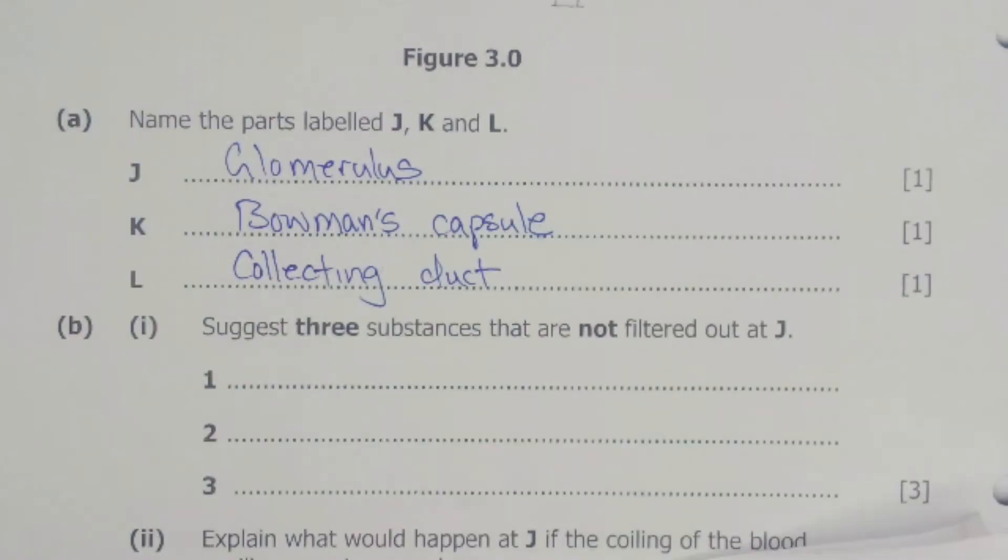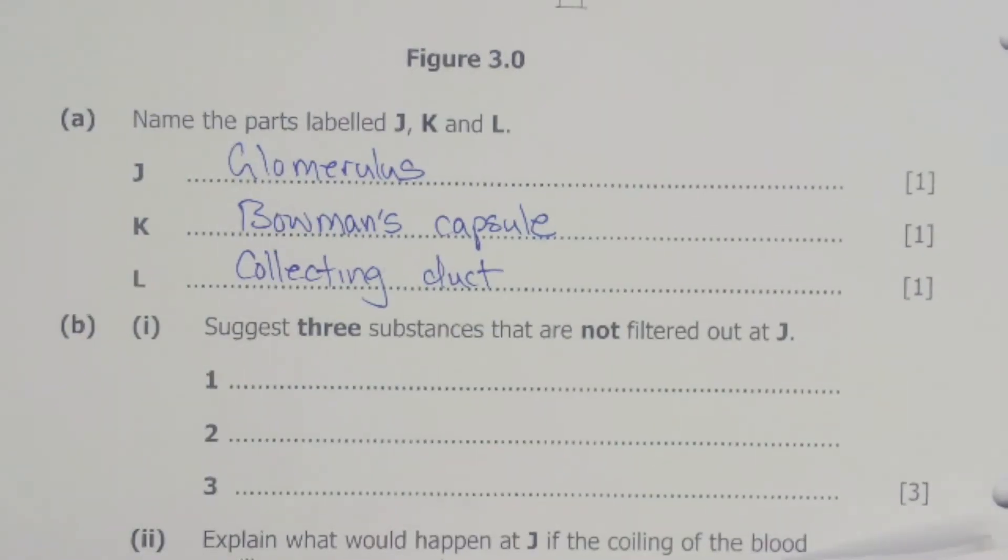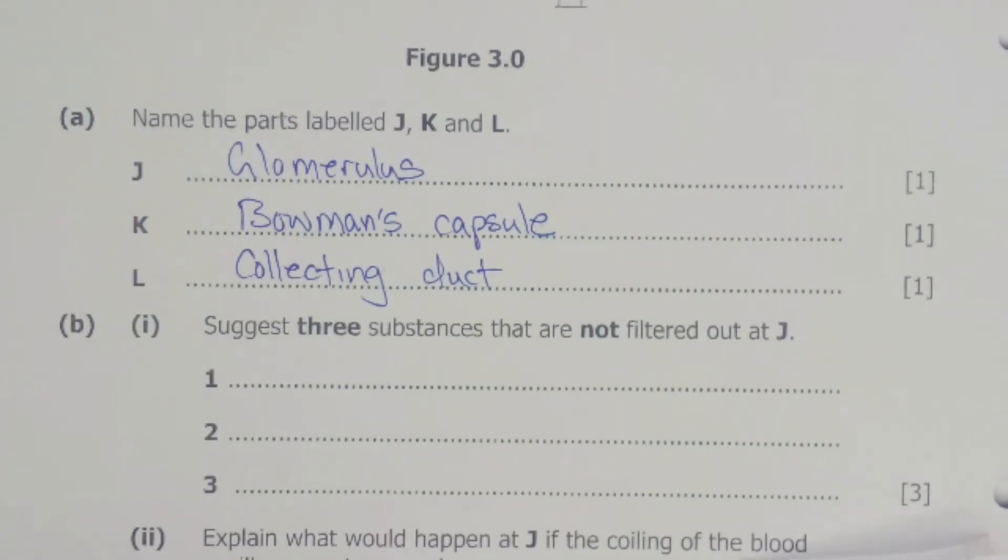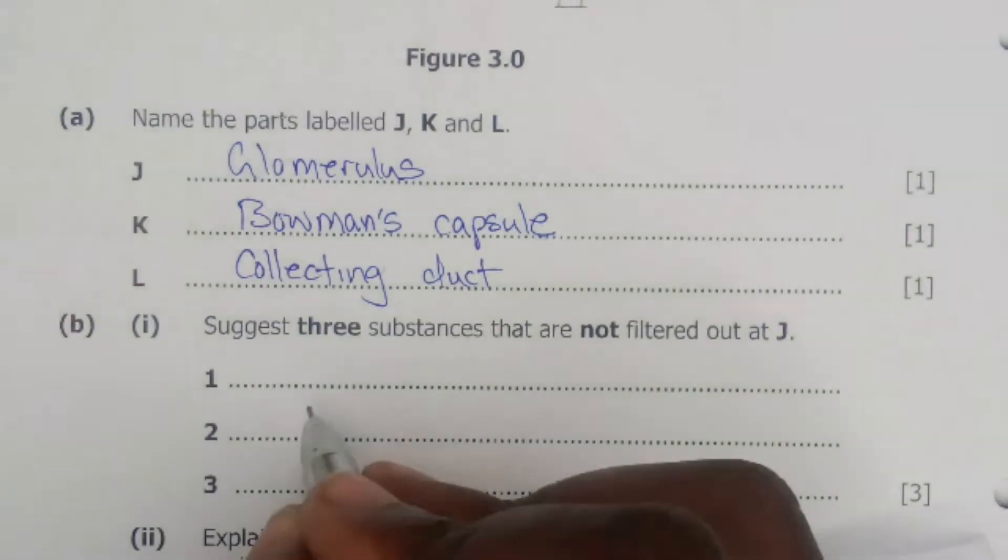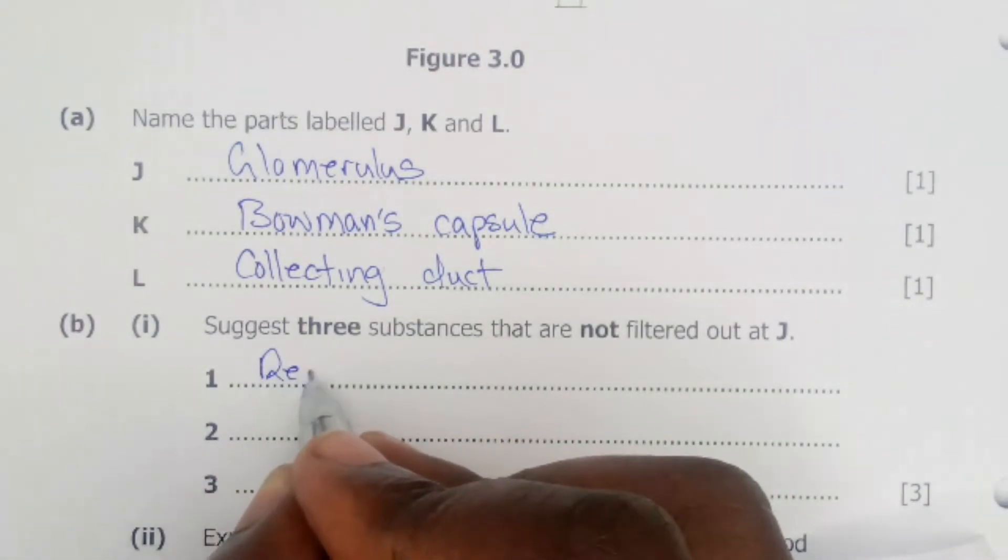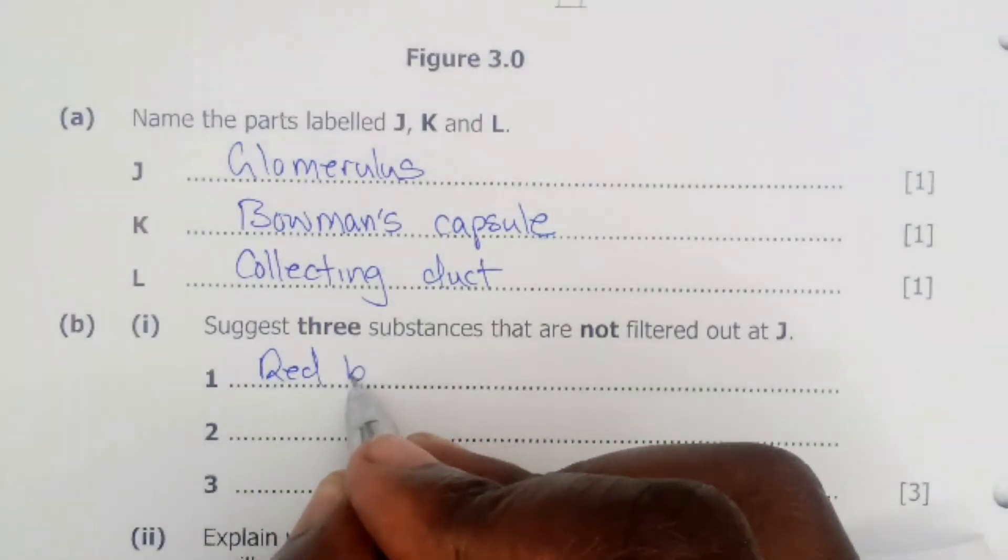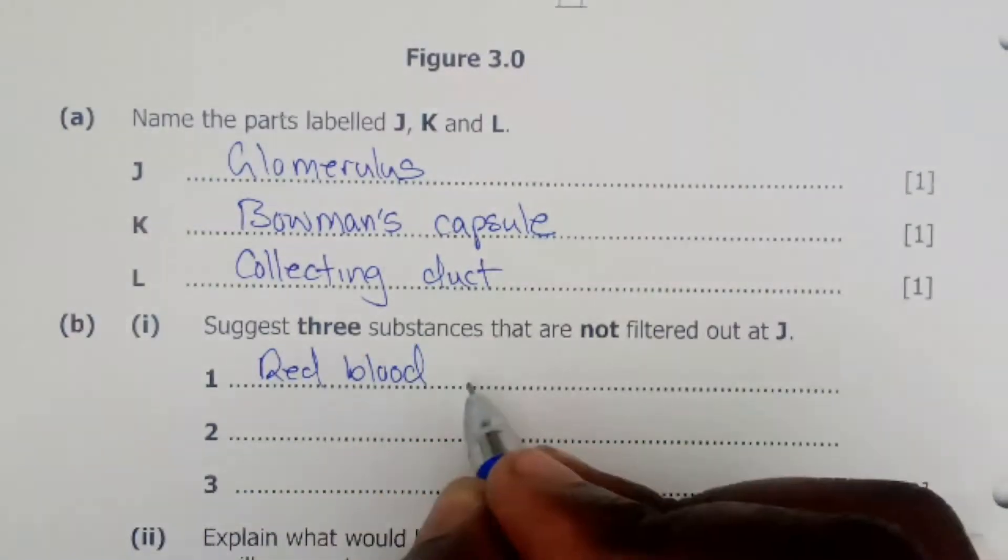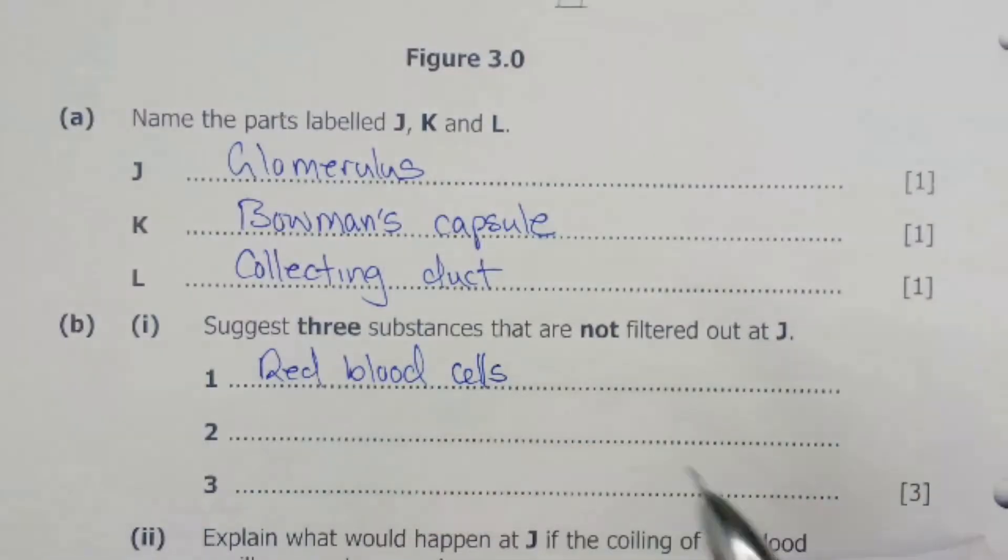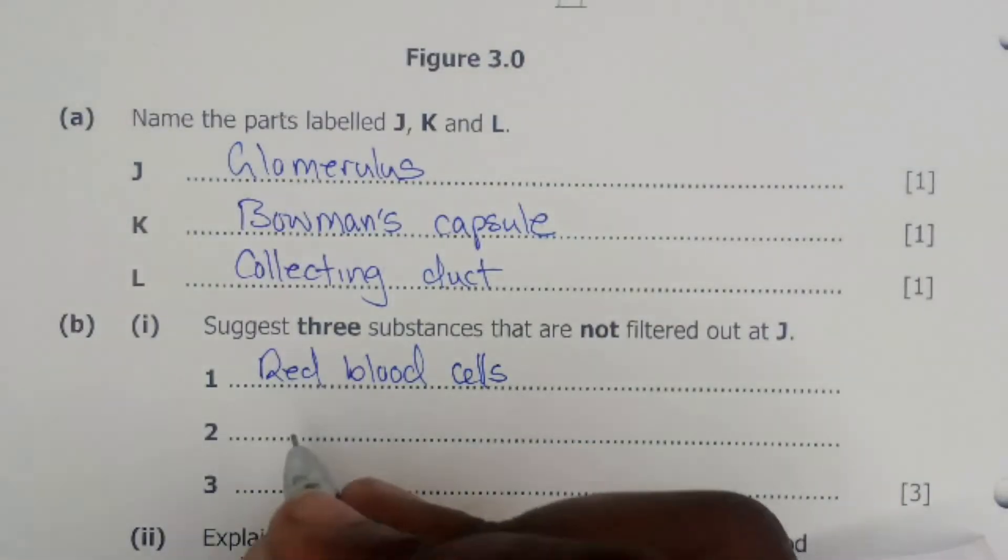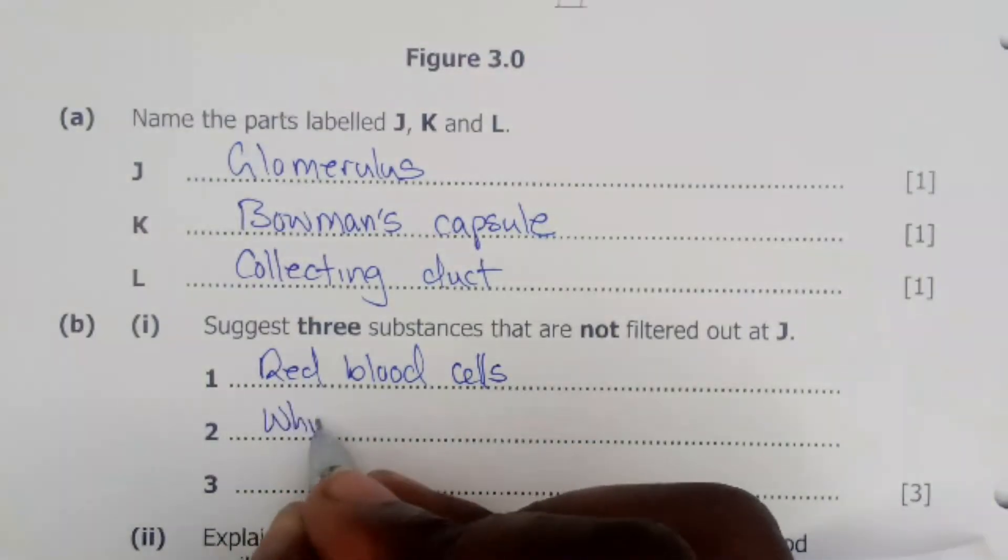The components of blood which are not filtered, which are large, we have the red blood cells. So the red blood cells won't be filtered, also the white blood cells.